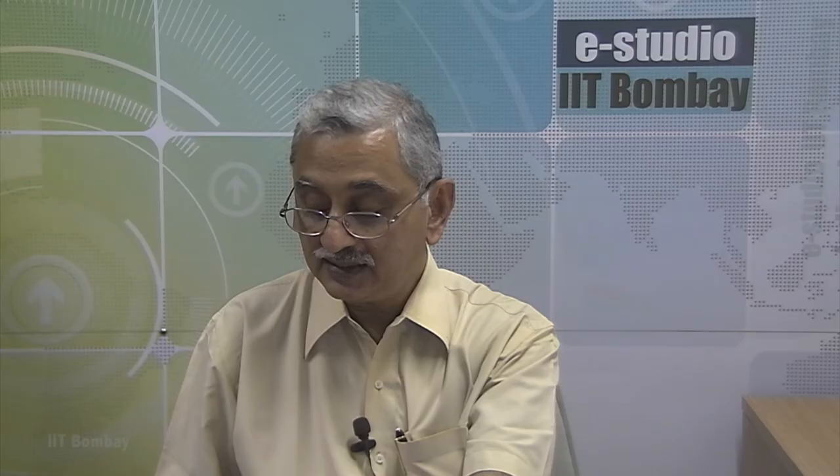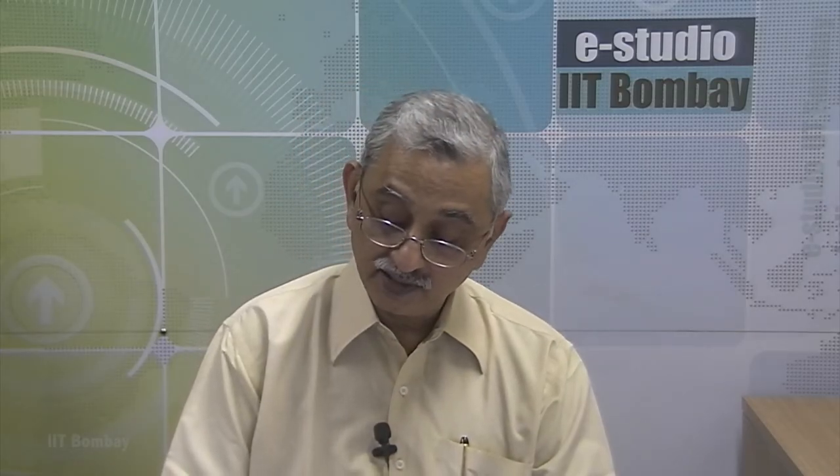Now what does this imply? Let me again write down. If we have an adiabatic system, if we have fixed initial and final states 1 and 2, then W_adiabatic from 1 to 2 is the same for all such, that means adiabatic, processes.